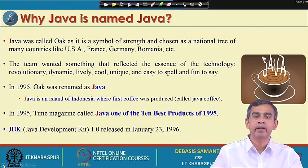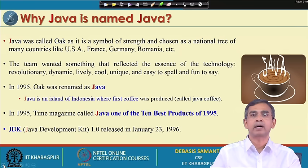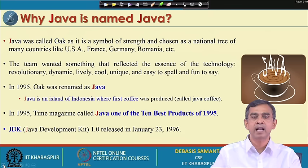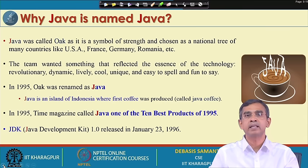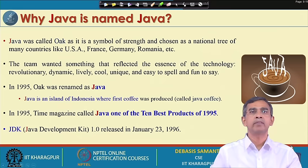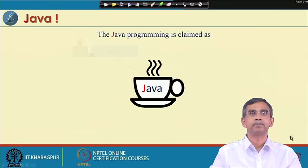Java became so popular that in 1995 Time magazine awarded Java as one of the best products. With this popularity and maturity, in 1996 Sun Microsystems first introduced a full set of programming environment called JDK — Java Development Kit. It was released on January 23, 1996. So this gives you a brief history of Java and why the name of the programming language is Java.